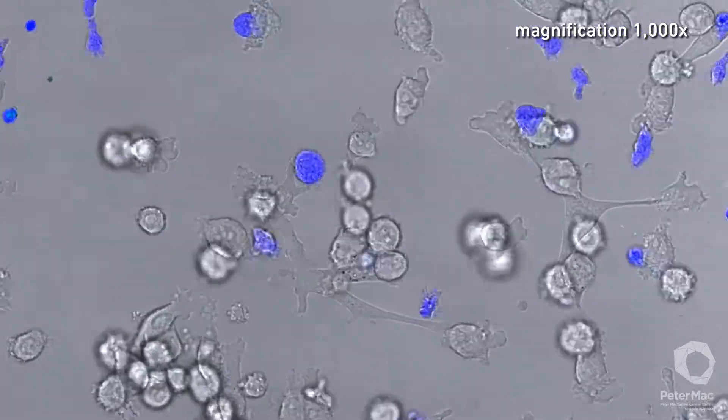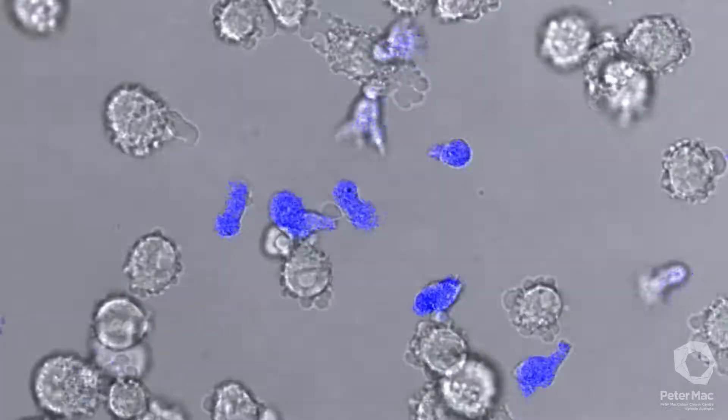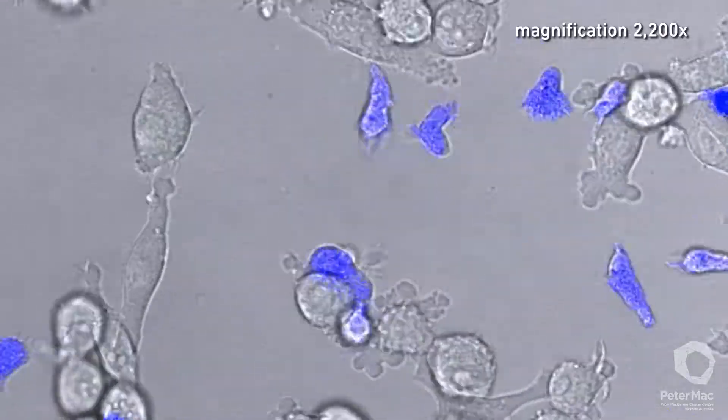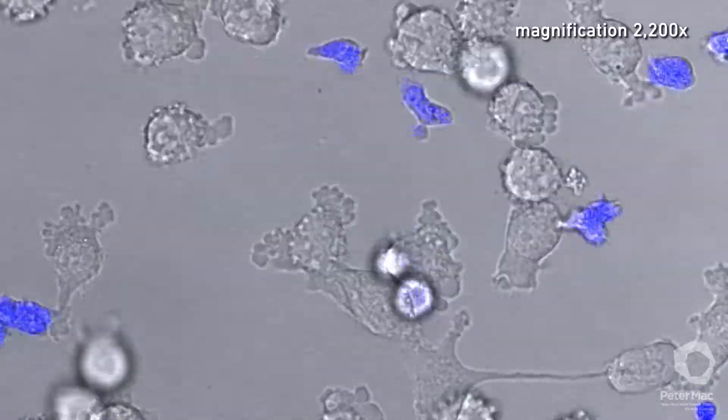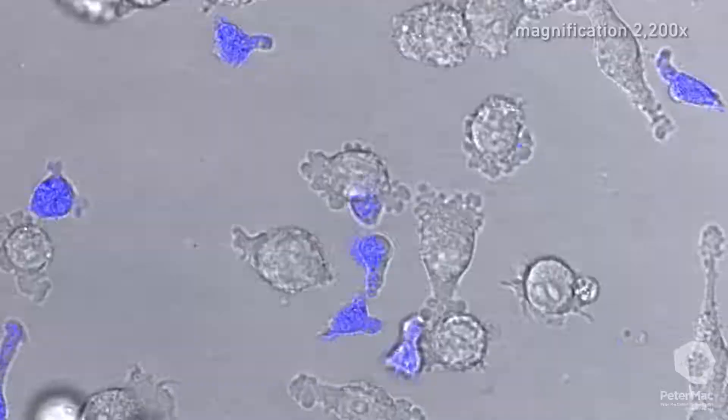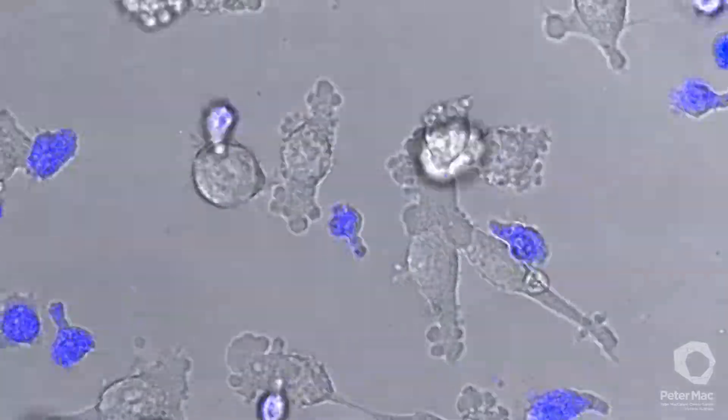Here in blue we can see some killer T-cells through the microscope. Killer T-cells actively patrol the body searching for anything foreign that shouldn't be there, such as infection and other diseases.